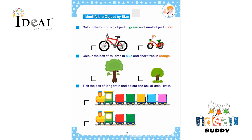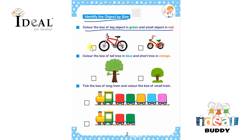Hello everyone. Here the topic is identify the object by size. The instruction is color the box of the big object in green and small object in red. So the child has to color the box of the big object in green.